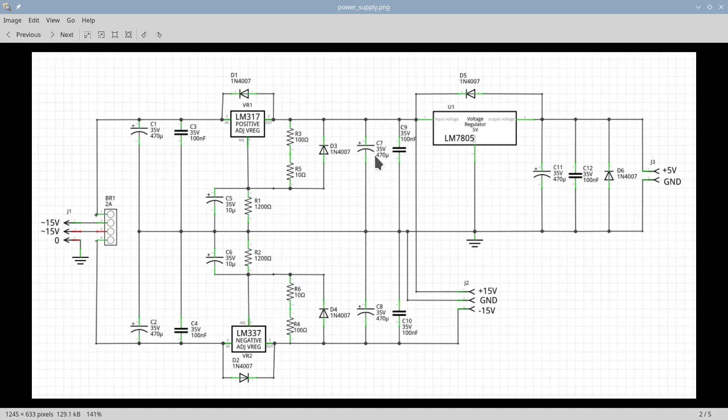Capacitors C7 and C8 provide additional stabilization, helping to maintain steady output voltages during sudden load changes that cause abrupt current variations. Capacitors C9 and C10 are included to filter out any high-frequency noise generated by the load. The pin header J2 provides access to the regulated plus 15V and minus 15V outputs from the power supply. Connected to the output of the LM317 regulator is the fixed LM7805 regulator, which supplies the 5V needed to power the Arduino Nano. Diodes D5 and D6, along with capacitors C11 and C12, serve the same protective and stabilization functions as their counterparts at the outputs of the plus and minus 15V regulators. Finally, the pin header J3 provides access to the plus 5V power supply for the Arduino Nano.